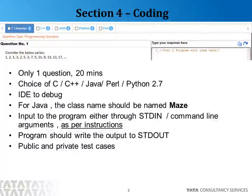In this section, there is only one question and you get 20 minutes to complete that program. This year we are offering you a choice of five programming languages: C, C++, Java, Perl, and Python. You can choose any one of these five languages. Please note that the Python version is 2.7.